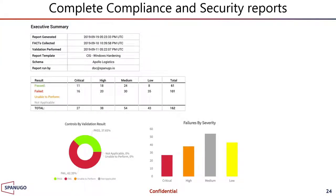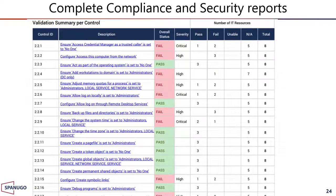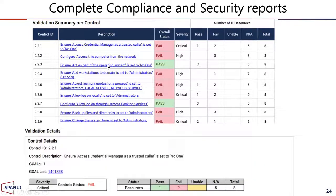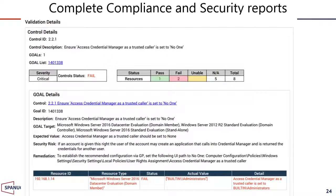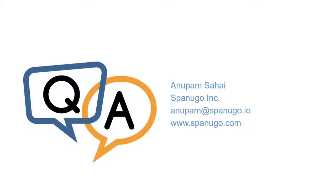Finally, reports provide a complete high-level overview: the pass/fail breakdown of policy checks, how many were critical, and what percentage passed or failed. You can keep drilling down to see every policy assessed, its overall status, how many IT resources passed or failed, and then get to the details of every control — including remediation guidance. That's a quick overview of Spanigo and how it helps achieve cybersecurity assurance goals.